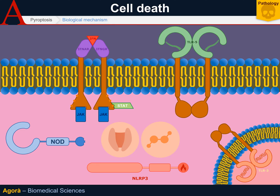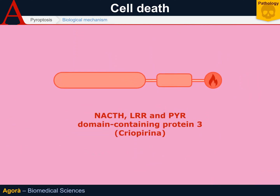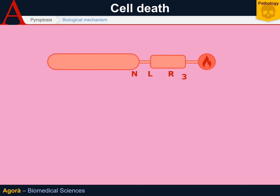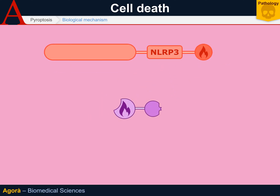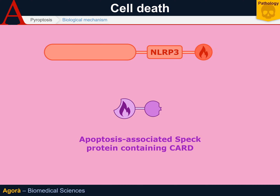NALP3 is a molecule whose name derives from its domains: a leucine-rich repeat typical of toll-like receptors, a NACHT domain, and a pyrin domain (PYD). NALP3 is capable of interacting with a molecule called apoptosis-associated speck protein containing CARD (ASC), an adapter molecule having a pyrin domain that interacts with the NALP3 pyrin domain, and a CARD domain capable of activating caspases.